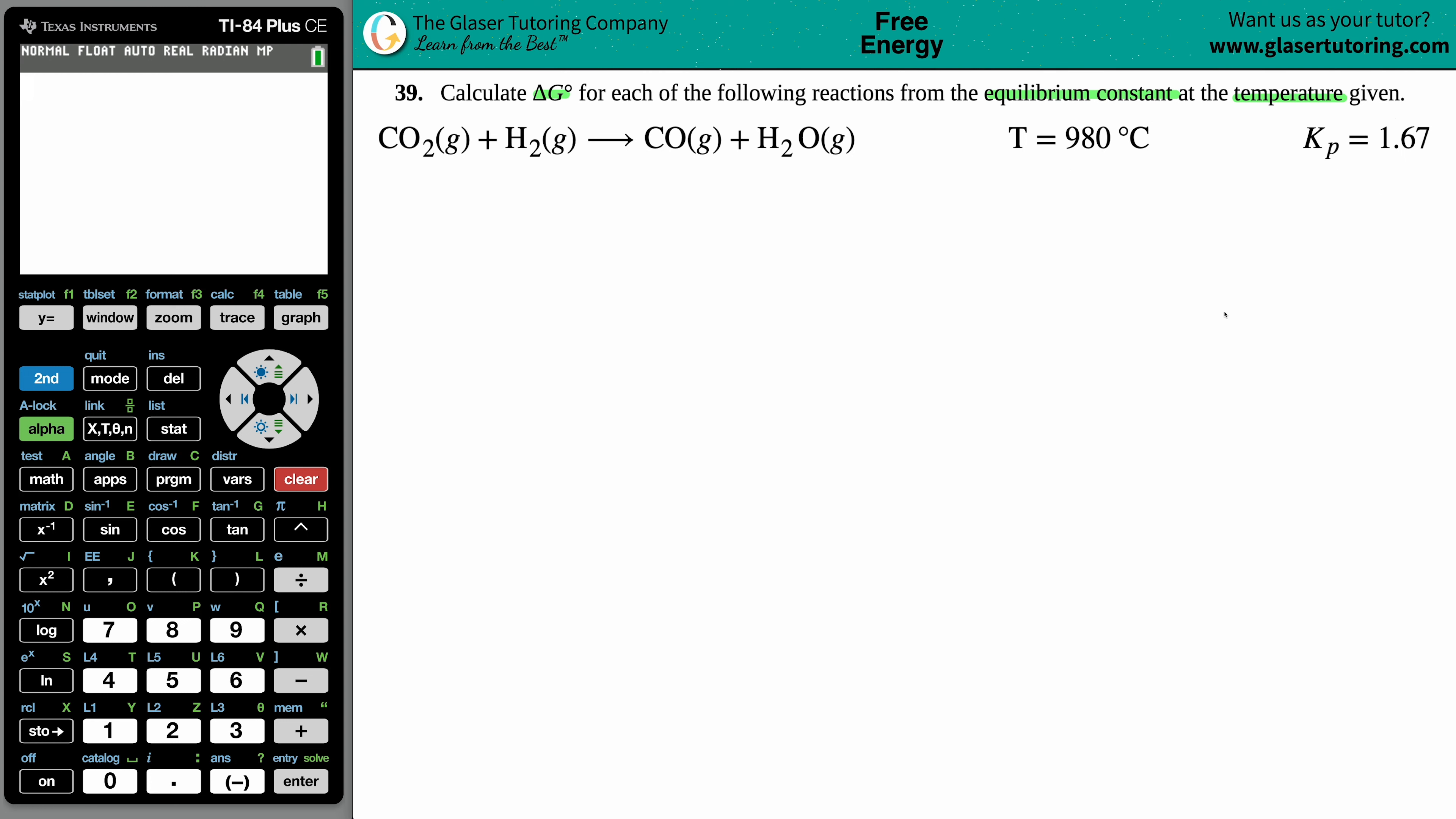From the equilibrium constant K value we want to find ΔG, the Gibbs free energy. When you have an equilibrium constant and you're solving for ΔG, only one formula should be going off in your mind. There's two variations of it.